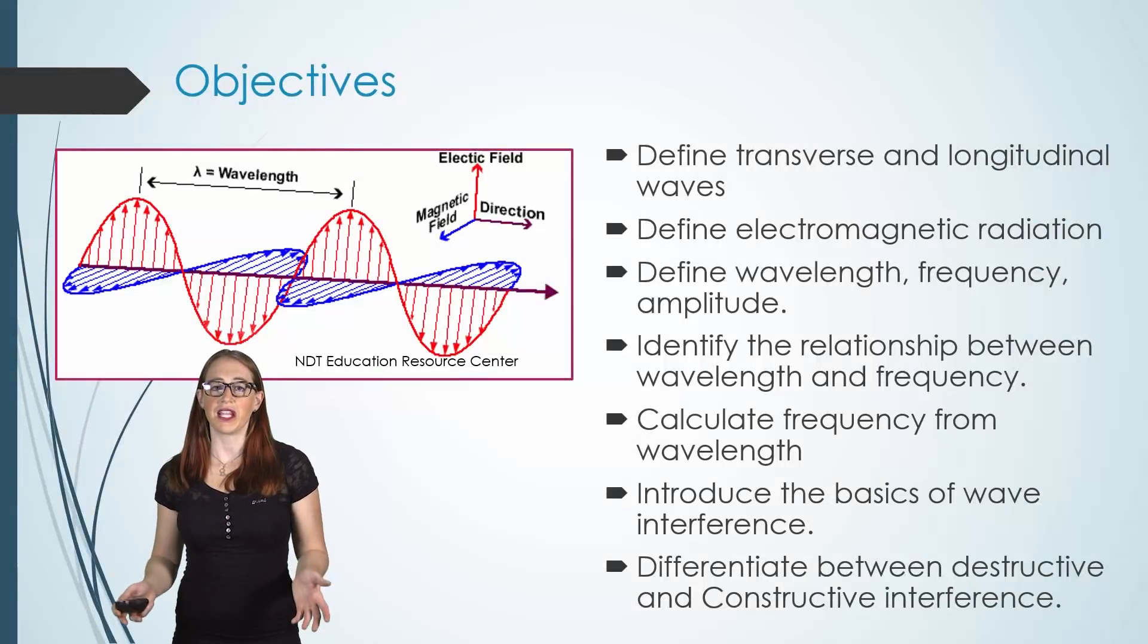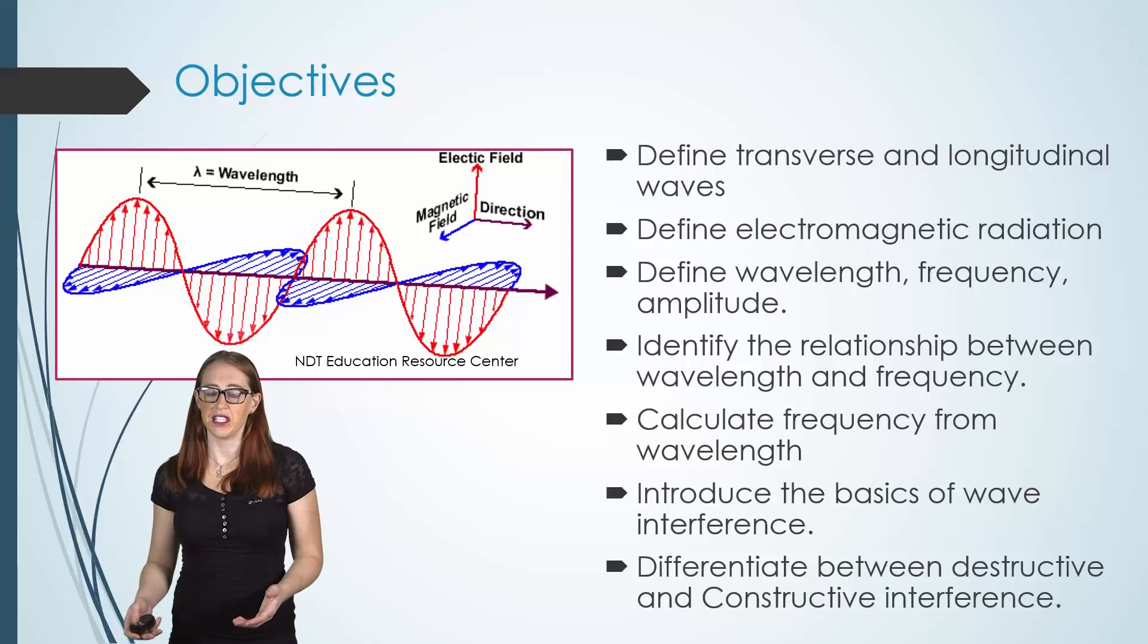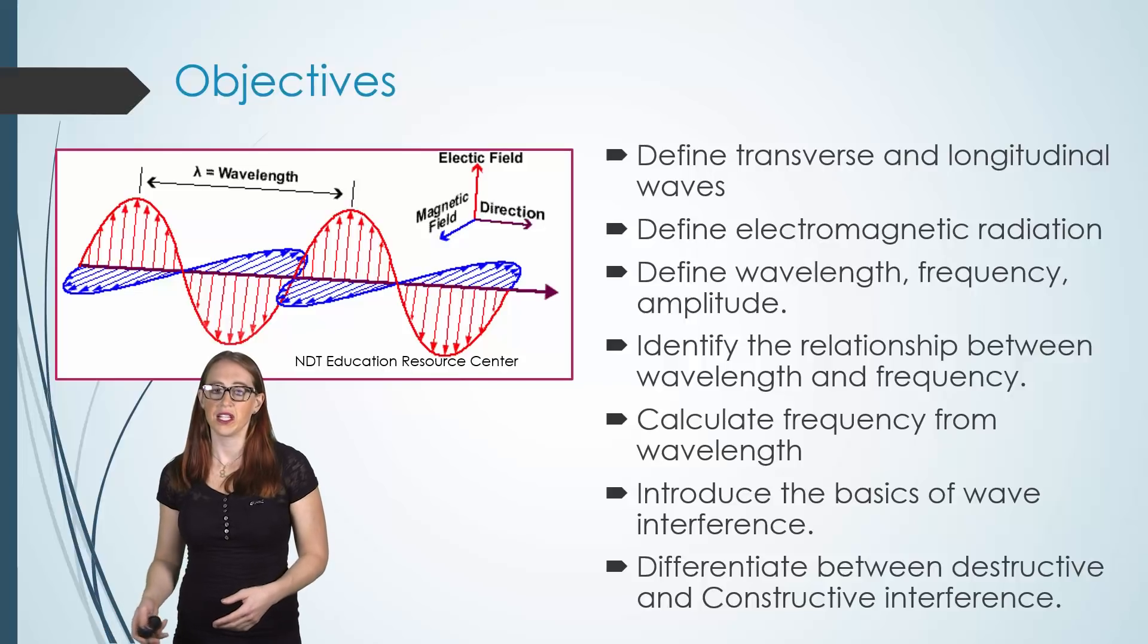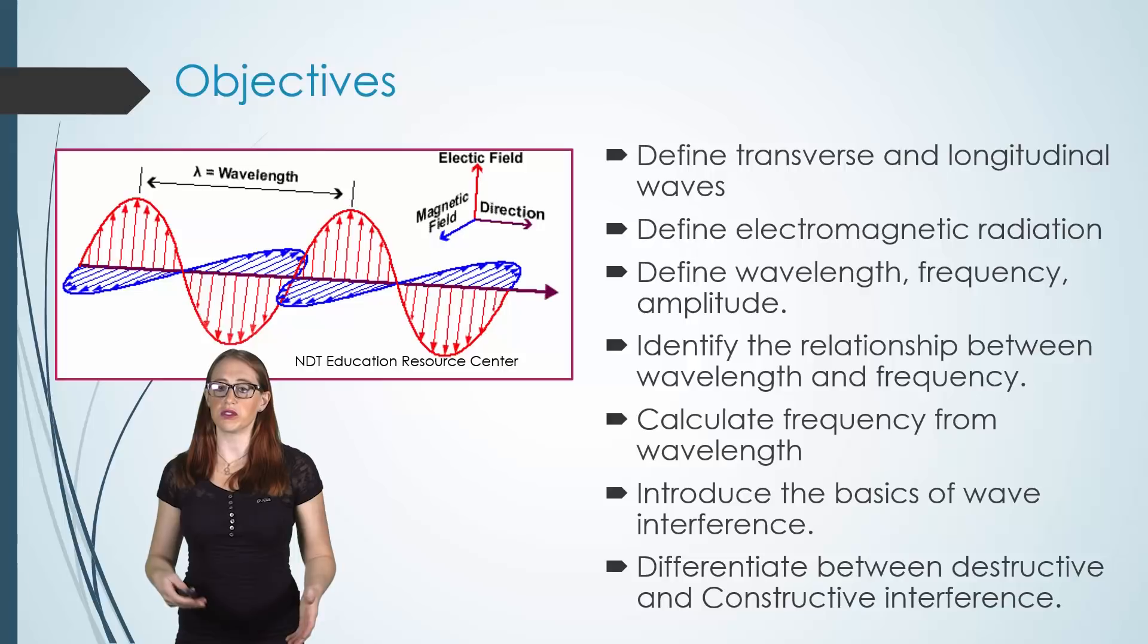In this video, we will define transverse and longitudinal waves, define electromagnetic radiation, define wavelength, frequency, and amplitude, and then identify the relationships between wavelength and frequency. We'll calculate the frequency from the wavelength and vice versa, and then we'll introduce the basics of wave interference. And then we'll work on differentiating between destructive and constructive interference.